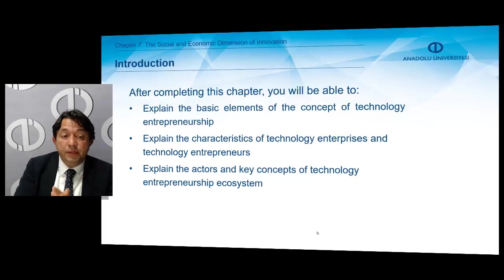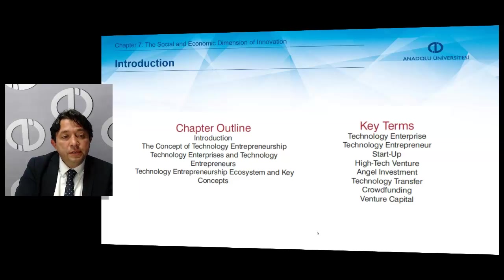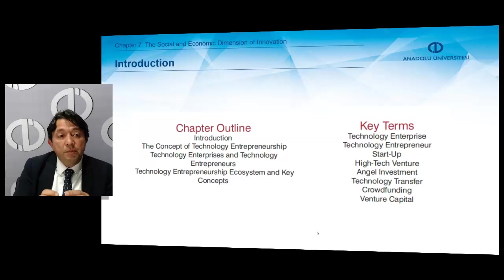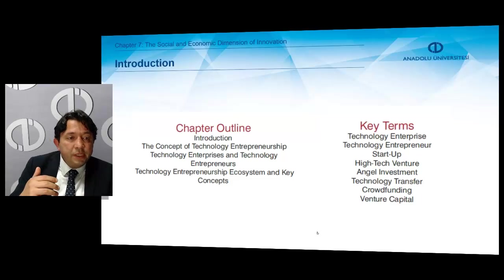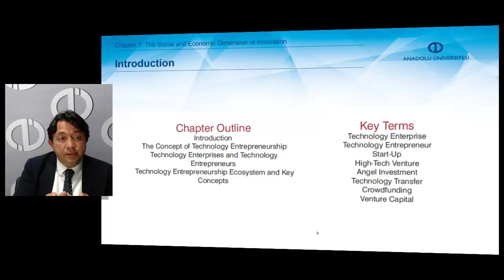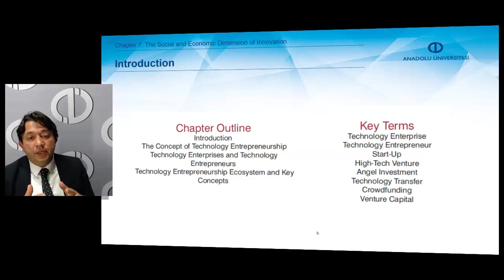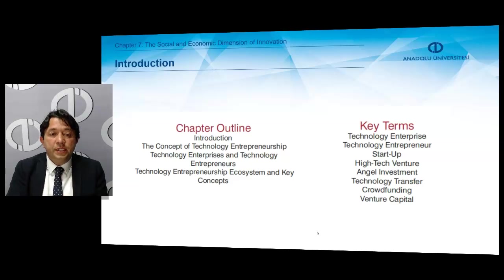This is our chapter outline and key terms. Our chapter consists of three subsections. The first subsection is about the concept of technology entrepreneurship. The second subsection covers technology enterprises and technology entrepreneurs. Finally, the third subsection concludes our chapter by explaining the technology entrepreneurship ecosystem and its key concepts.